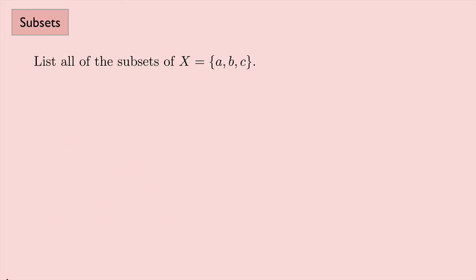Let's look at one more example. Let's list all of the subsets of the set X, which has the elements A, B, and C. Now, we'll try and do this in kind of a way that makes sense.